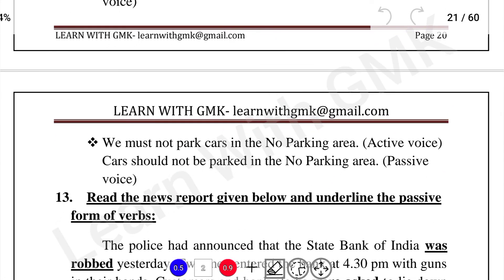We must not park cars in no-parking area — this is active voice. 'Park' is the verb and 'cars' is the object. The object replaces the subject: 'Cars should not be parked in no-parking area' — this is passive voice. Note: 'must not' in active voice becomes 'should not be' in passive voice.